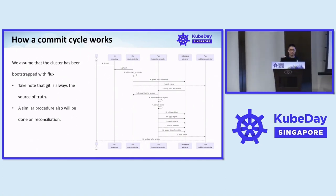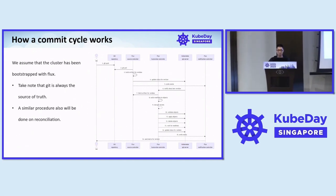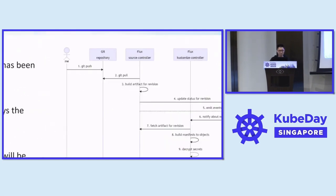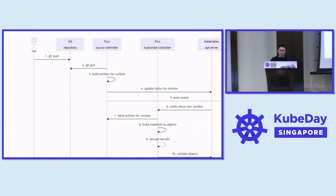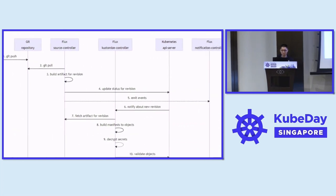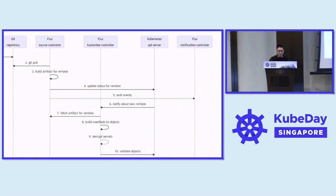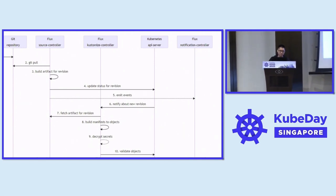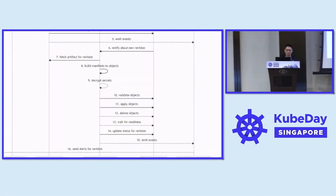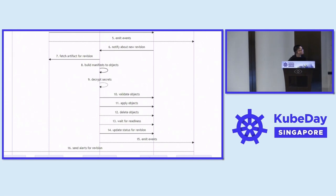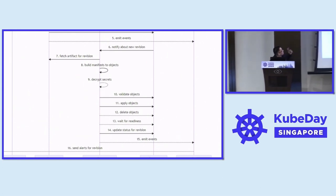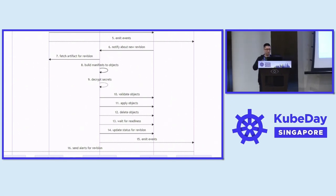How the commit cycle works: Git is always the source of truth. You push to a Git repository, the Flux controller pulls from it, builds an artifact, generates a status, looks at the Kubernetes API server, which notifies a new revision, fetches the artifact, and so on. On step nine, there's also the ability to decrypt secrets.